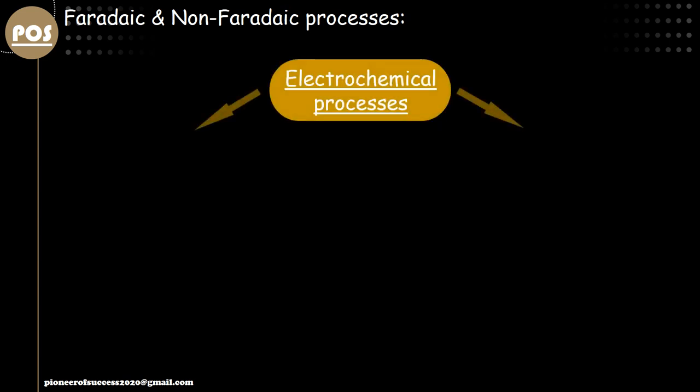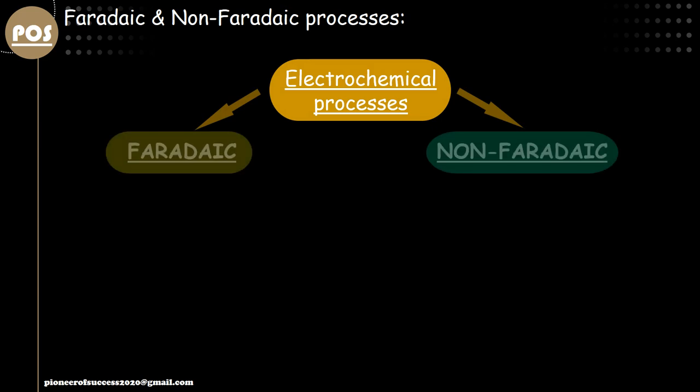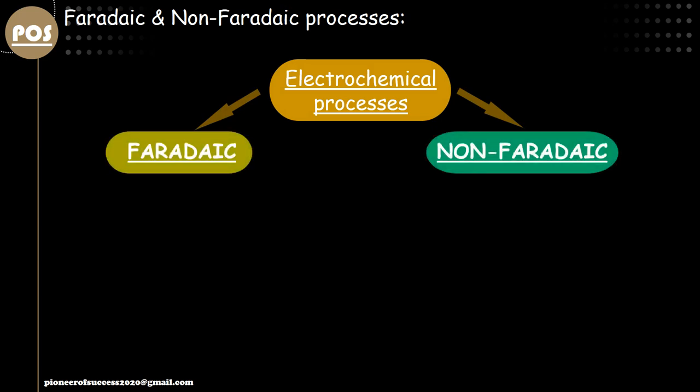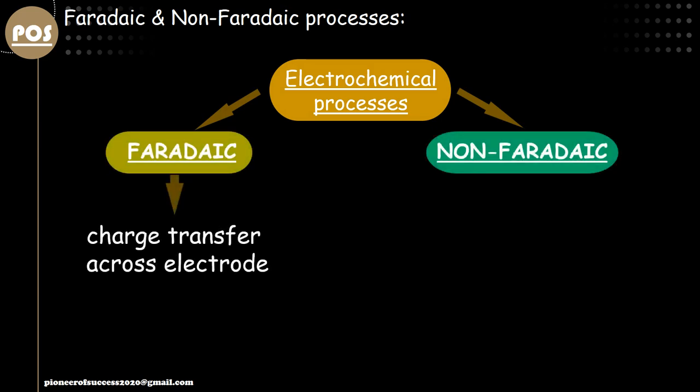Typical electrochemical processes are categorized into two: faradic and non-faradic. A faradic process is something where there is a charge transfer across the electrode. In layman's language, if there is a heterogeneous reaction happening across the electrode-electrolyte interface, actual electrons are getting exchanged between the electrolyte and the electrode, and those processes are faradic. In a faradic process, if we take a cyclic voltagram, we get a characteristic peak that we will talk about in upcoming videos.